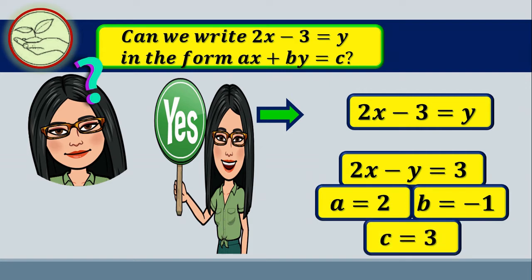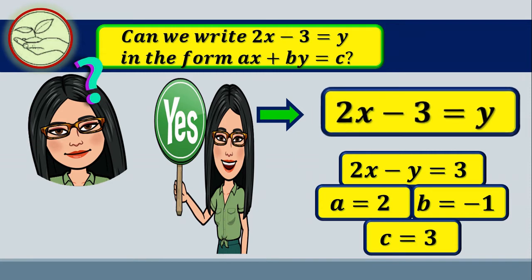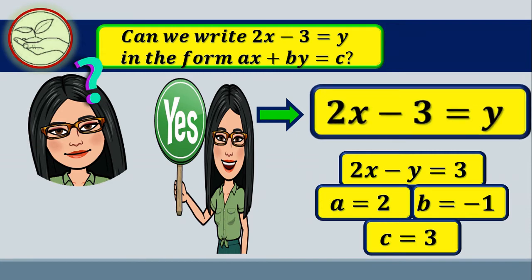How do you know if an equation is a linear equation in two variables? The exponents of the variables x and y must be equal to 1. The values of a, b, and c must be real numbers, and a and b must not equal 0. Therefore, 2x minus 3 equals y is a linear equation in two variables.